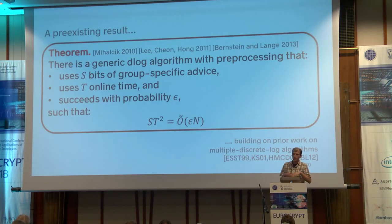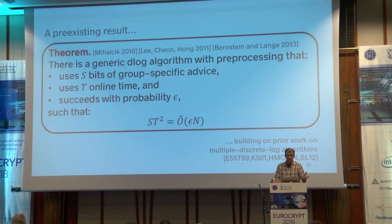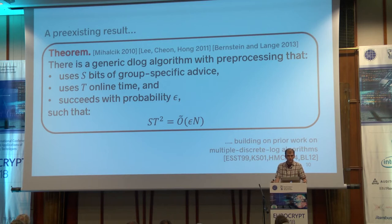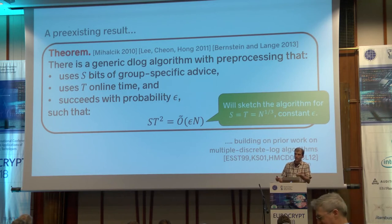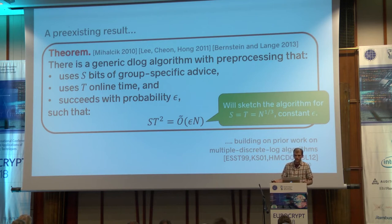The first thing I want to show is this pre-existing result: a preprocessing attack on discrete log that works in every group. The theorem appears in many different places. There's a generic discrete log algorithm with preprocessing that uses S bits of group-specific advice and online time t, and succeeds with probability epsilon, where the parameters satisfy a trade-off of the form S·t² ≥ ε·n (hiding log factors). If you plug in S equals t equals cube-root of n, you get an algorithm that succeeds with constant probability.